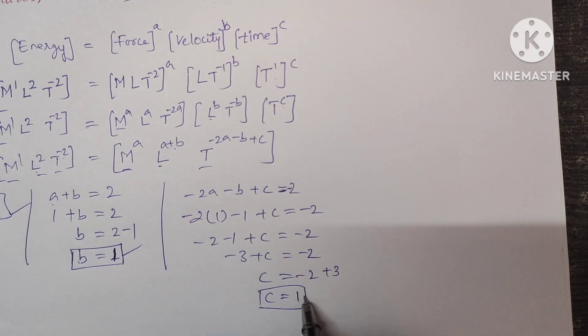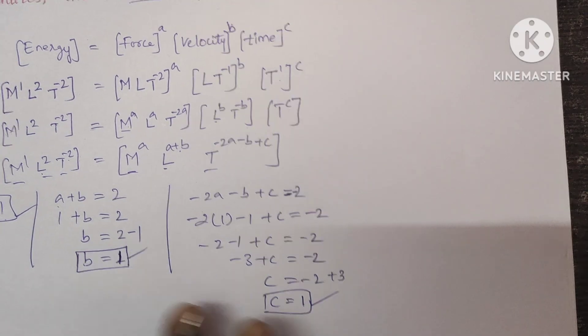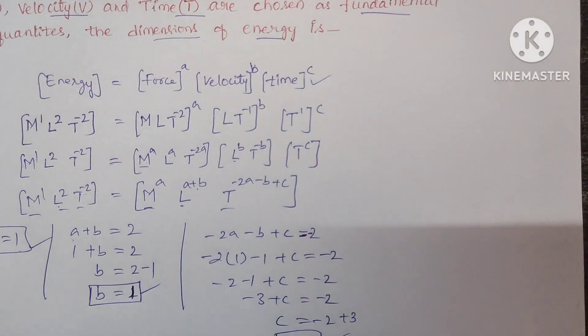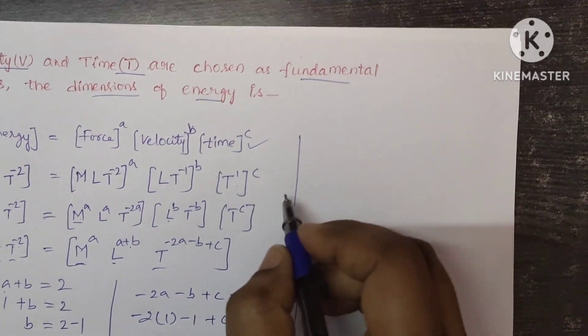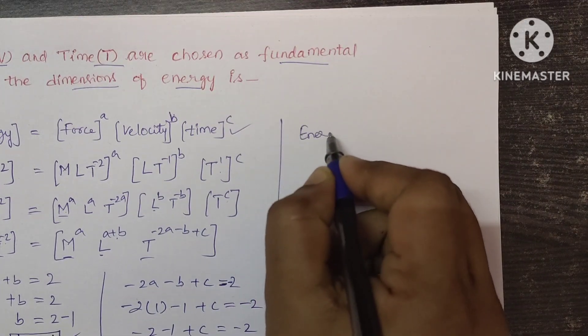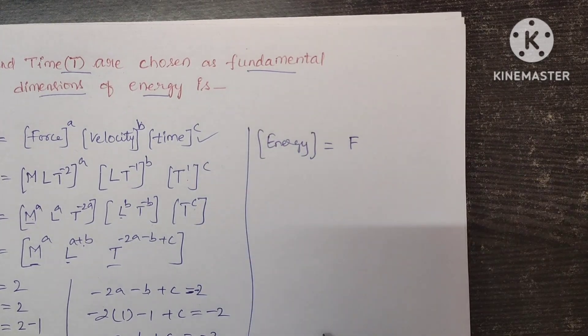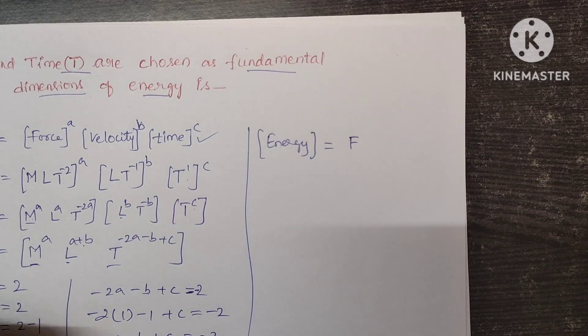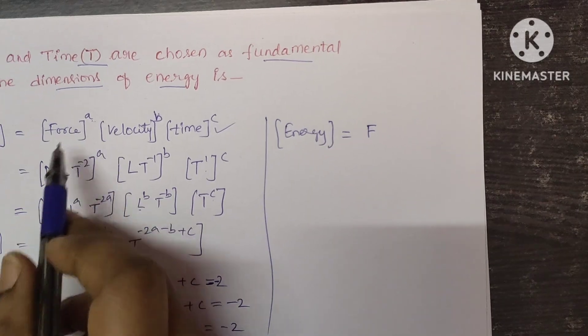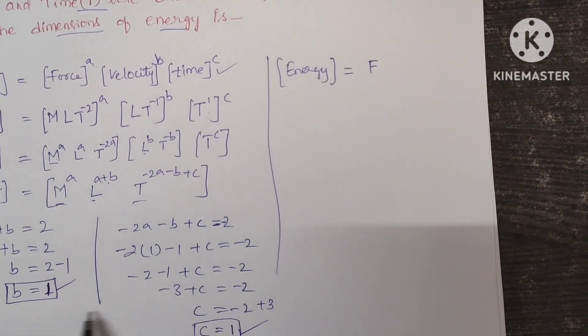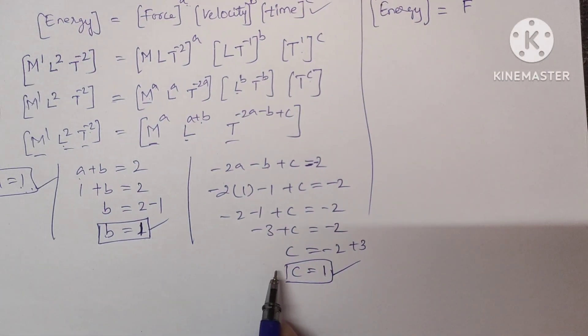A is 1, B is 1 and C is also 1. Substitute ABC values here in this equation, you will get dimensions of energy. Dimensions of energy in terms of force. Force is represented with letter F. So F power A, A is there here. So A value is 1. ABC all the values you got it here at us 1 only.